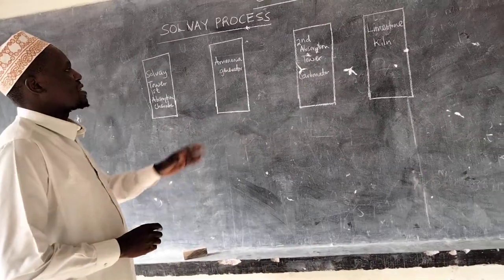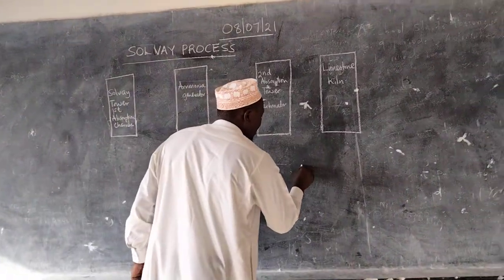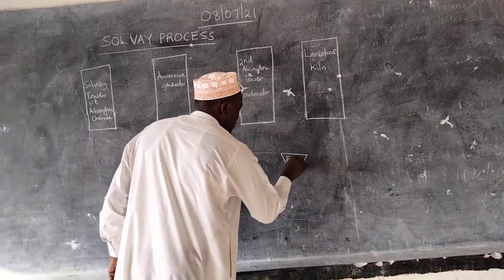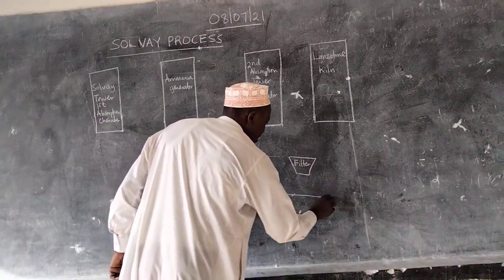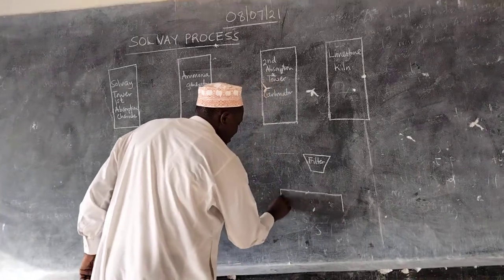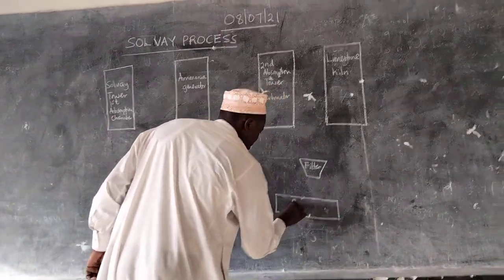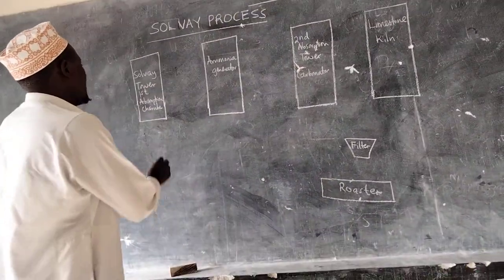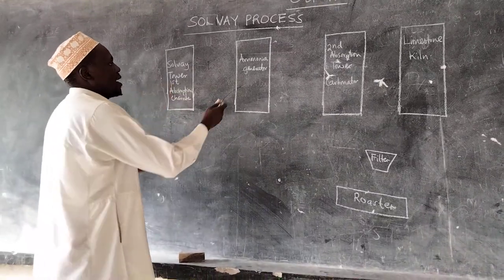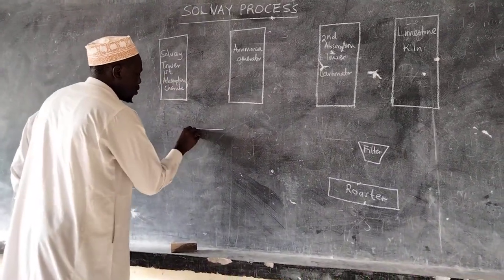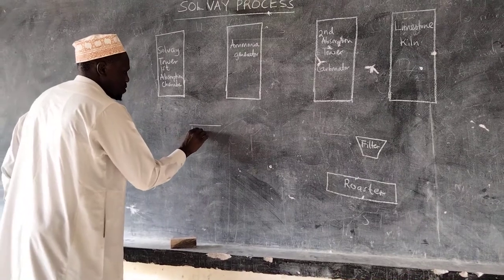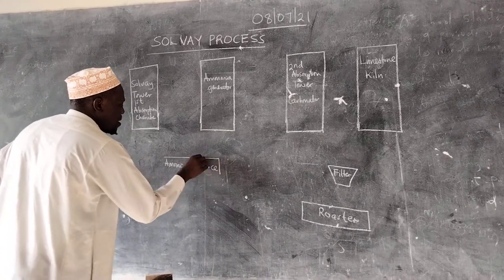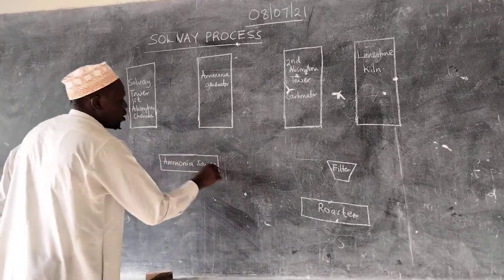Between the limestone kiln and the second absorption tower, we have a filter. At the bottom of the filter, we have another structure called a roaster. Between the Solvay tower and the ammonia generator, we have what we call the ammonia source. These are the main components of the Solvay process.